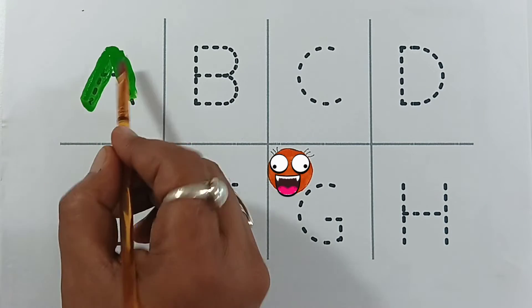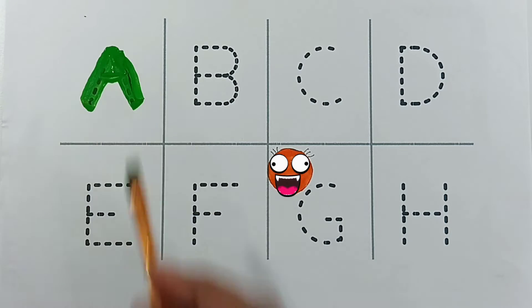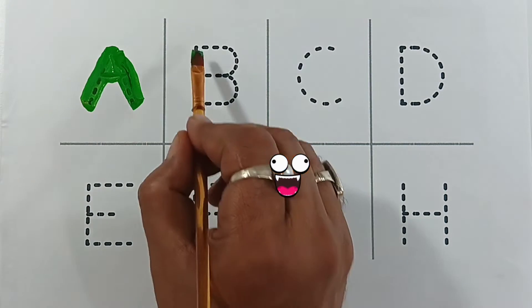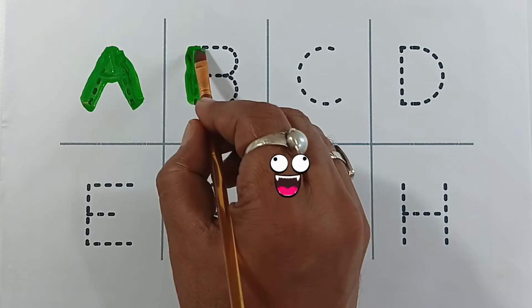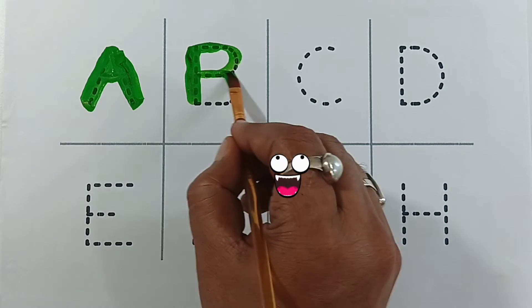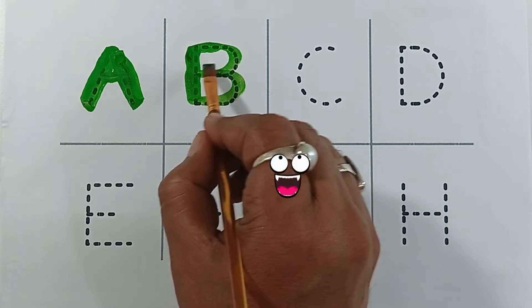Green color A. A for apple. Green color B. B for ball.